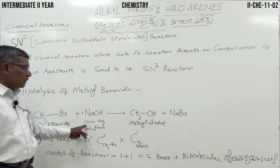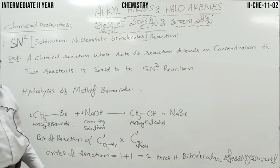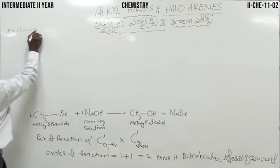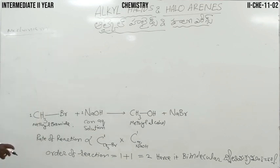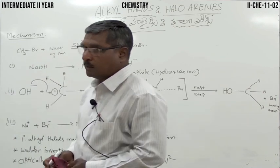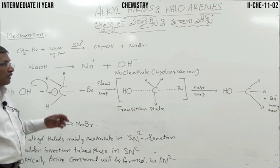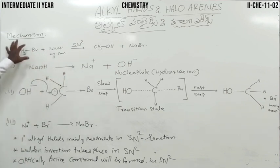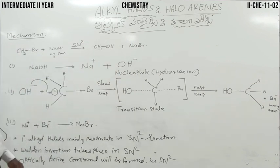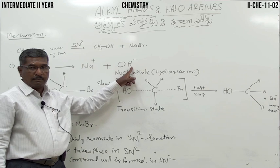For methyl bromide reacting with sodium hydroxide, we get methyl alcohol and sodium bromide. The rate of reaction belongs to a bimolecular reaction. First stage: sodium hydroxide undergoes ionization as Na⁺ and OH⁻. OH⁻ is nothing but the hydroxide ion.